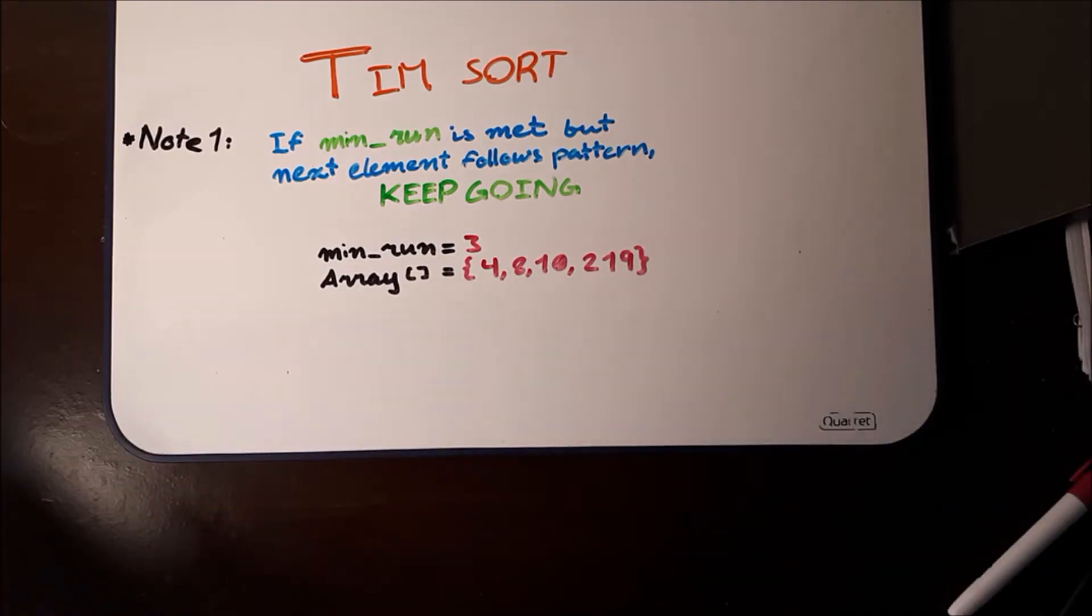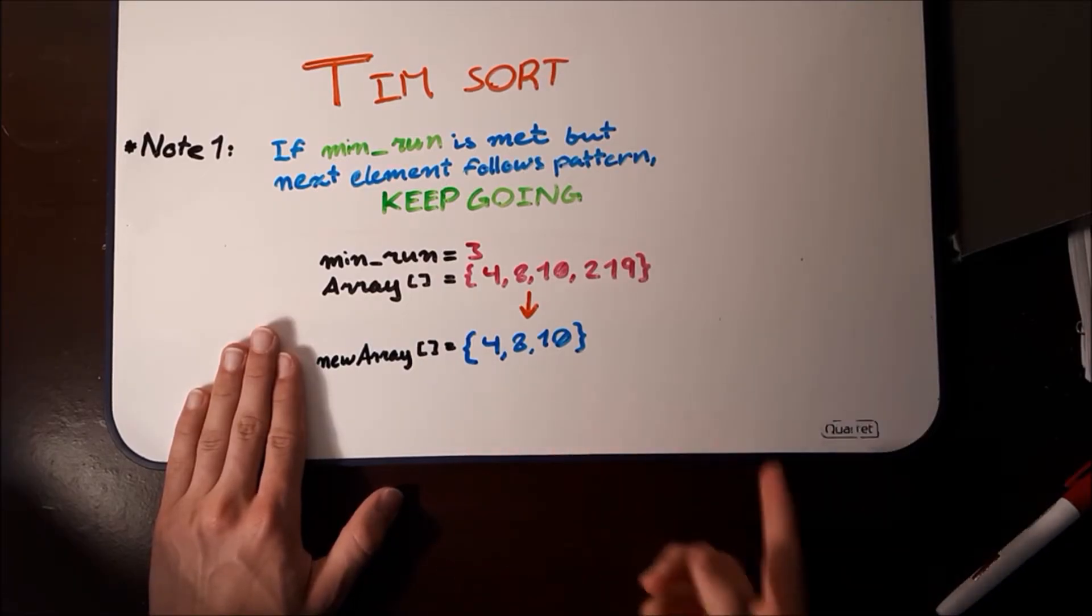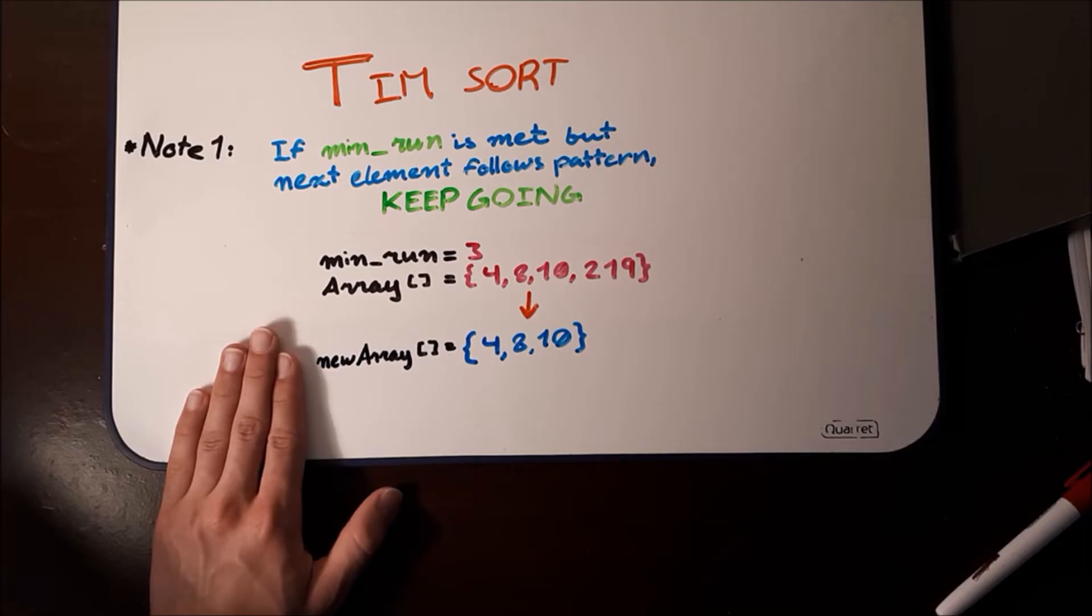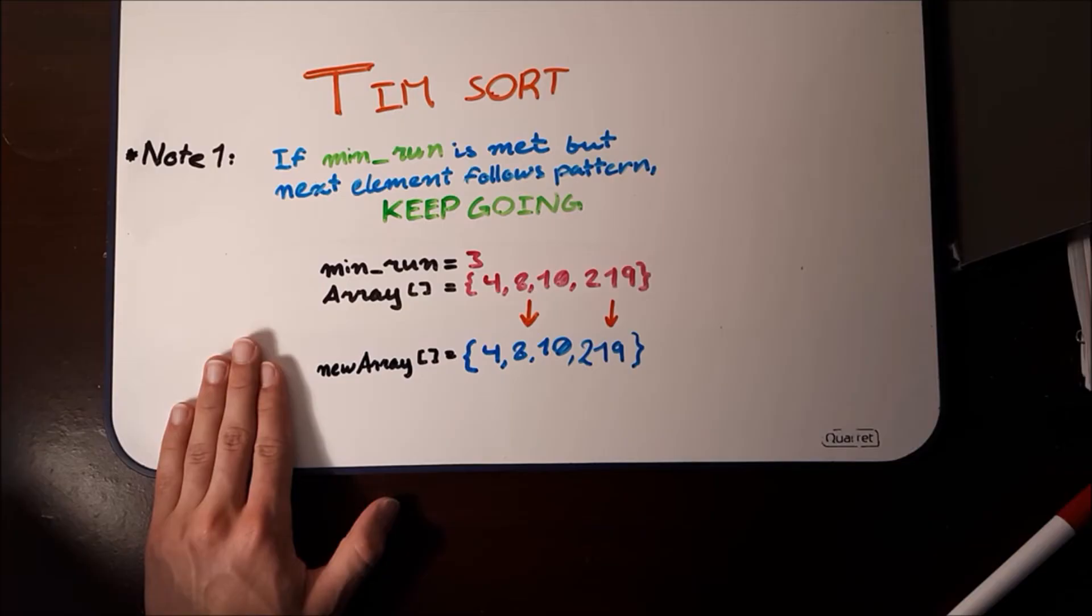4, 8, and 10 already meet the minrun. But, 219 still follows the ascending pattern, 4, 8, 10, 219, right? So, what happens is that the array still considers 219 as part of this run.